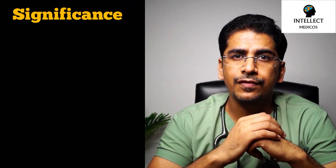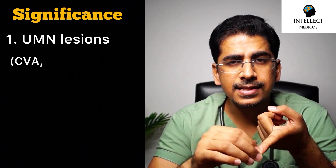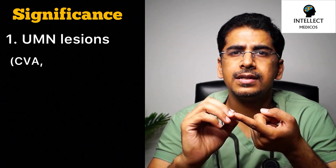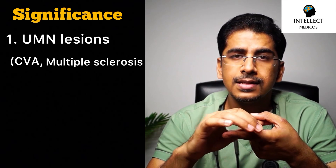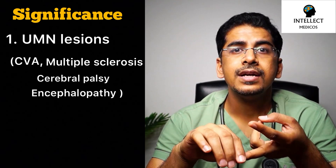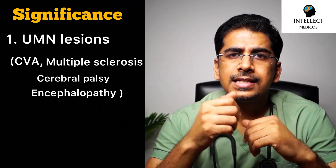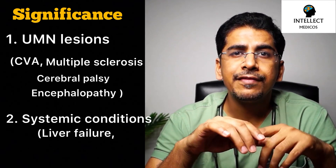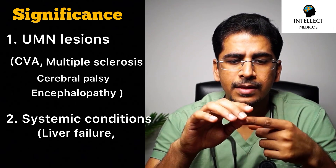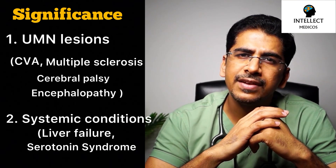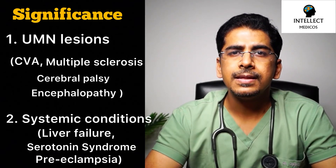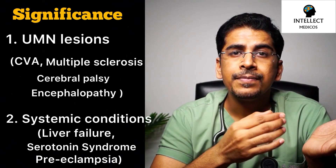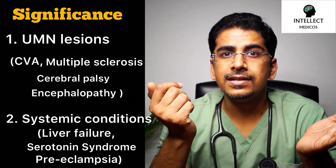Talking about the significance of clonus: first, it signifies upper motor neuron lesions, such as in cases of cerebrovascular accidents — CVA — including ischemic stroke or hemorrhagic stroke. Second, in cases of multiple sclerosis. Third, in cases of cerebral palsy. Fourth, in cases of encephalopathy. It is also present in systemic diseases like liver failure, mainly hepatic encephalopathy. Second, in cases of serotonin syndrome — this is very important. Third, in preeclampsia: when a pregnant patient has clonus, that is a risk factor for getting convulsions.